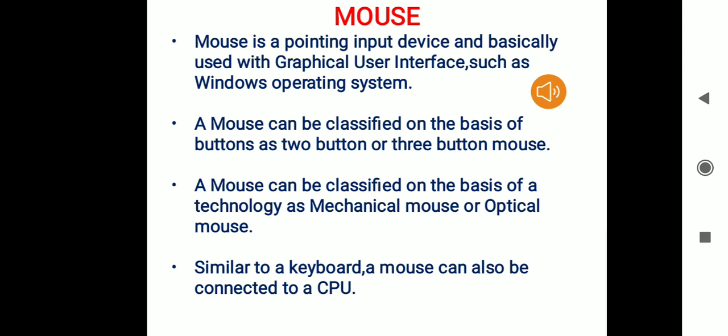A graphical user interface is an interface consisting of graphical materials. Common examples are the Windows operating system or the Linux graphical user interface operating system. A mouse can be classified based on the number of buttons — it can be a two-button mouse or a three-button mouse. A mouse can also be classified on the basis of technology as a mechanical mouse or an optical mouse. In both cases, the middle button is the scroll button.